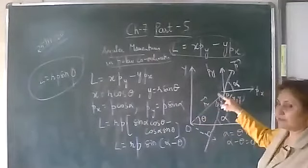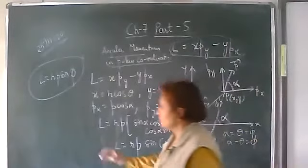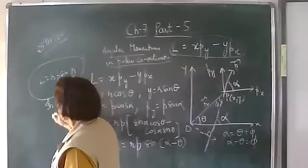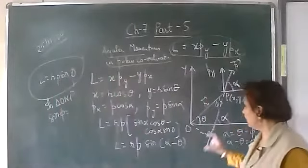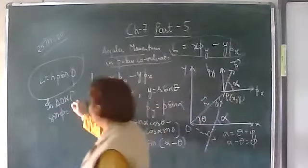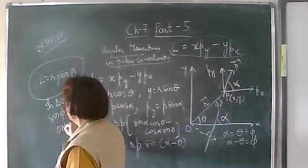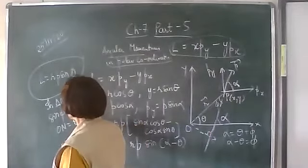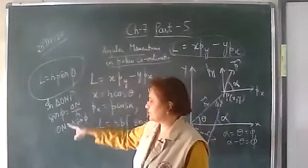This becomes a right angle triangle ONP. In this right angle triangle we find out sin phi. In triangle ONP, sin phi is equal to perpendicular upon hypotenuse — perpendicular is ON and the hypotenuse is R — so ON upon R. That is, ON, the perpendicular distance, is equal to R sin phi. So R sin phi is substituted as ON.